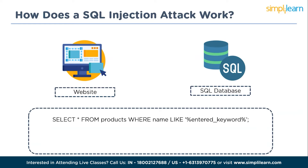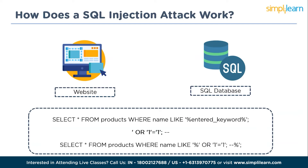However, if the website is vulnerable to SQL injection, an attacker can manipulate the input to execute malicious SQL statements. If an attacker wants to retrieve all products regardless of the keyword, they enter in the search field: ' OR 1=1 --. This manipulates the SQL query so it becomes: SELECT * FROM products WHERE name LIKE '%' OR 1=1 --%. The attacker uses the single quote to close the existing string, followed by OR 1=1, then double hyphens to comment out the remaining portion of the original query, injecting a condition that is always true.